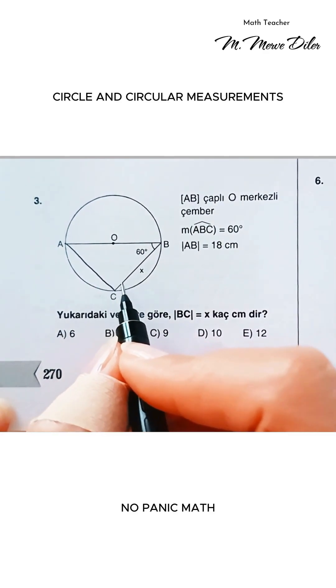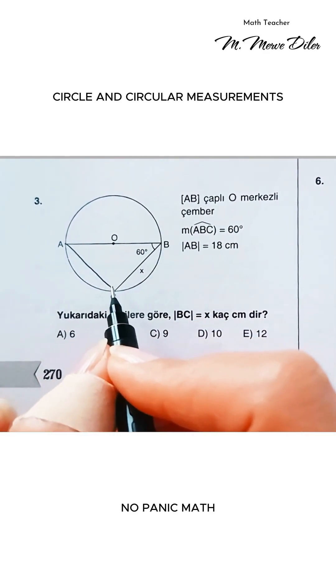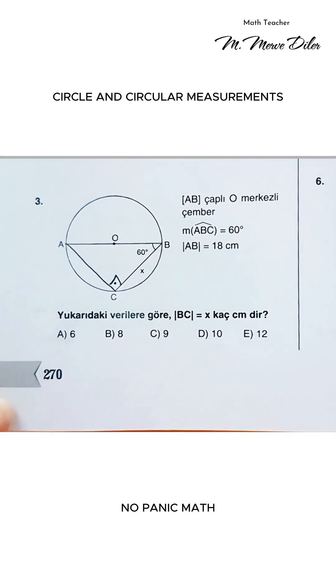See, this inscribed angle here intercepts the diameter. An inscribed angle that intercepts the diameter is 90 degrees.